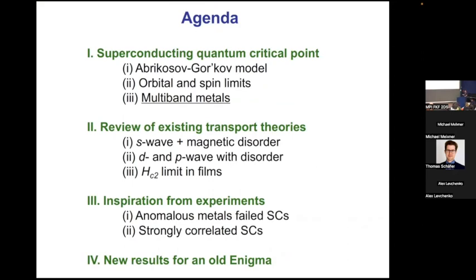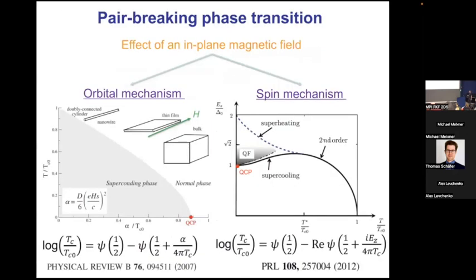I'll give you a reminder about the superconducting quantum phase transitions and some best studied examples, which is the Abrikosov-Gorkov model with magnetic disorder. I'll talk about superconducting films subjected to in-plane field. My talk is about multi-band metals. I will give you one model that is analytically tractable. I'll spend a good chunk of time just reviewing an important old work that set the stage for this problem. I'll prepare a couple of slides as motivation from the experiment, and then this would follow with discussion of new results.